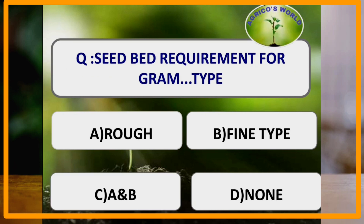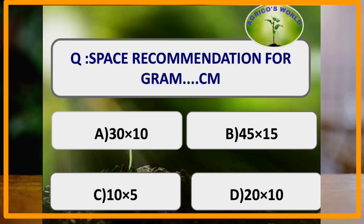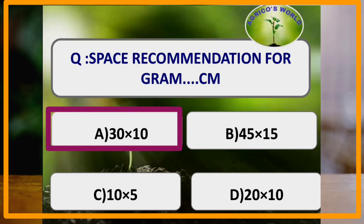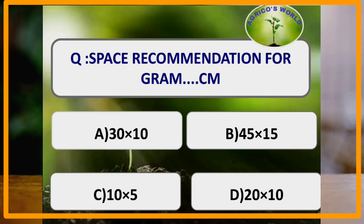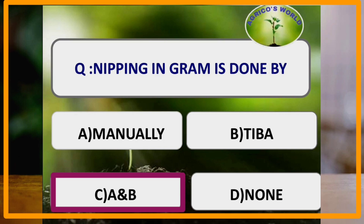Seed bed requirement for gram: gram requires a rough type seed bed. It has high oxygen diffusion rate and good aeration. Spacing recommendation for gram is 30 by 10 centimetres. Nipping in gram is done manually and by TIBA, that is 2,3,5-triiodobenzoic acid.